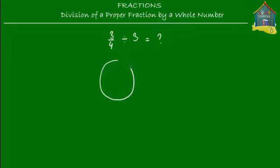So what we do is we take a pizza and what we have is only three quarters of this pizza. I'm going to cut this up into four pieces and what we have is only three pieces. So let me use dotted lines just to show that we don't have one piece.